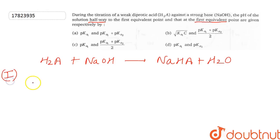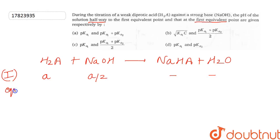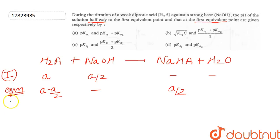If we talk about moles, then for H₂A, if we consider A moles, then A moles are given. Halfway to the first equivalent point means A/2 moles of NaOH are added. Initially NaHA is not present. At equilibrium, H₂A becomes A minus A/2, NaOH is completely consumed, and NaHA forms A/2.